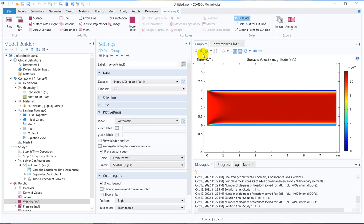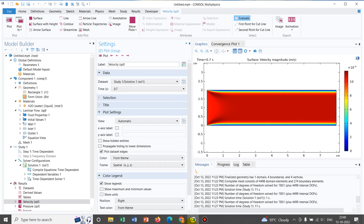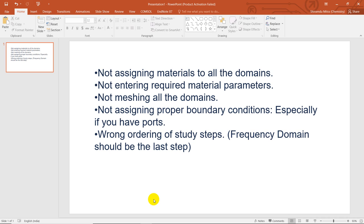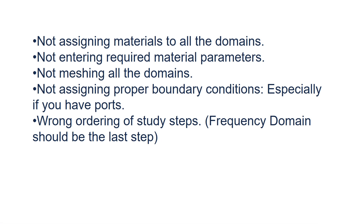So let us go ahead with today's discussion. As I have mentioned, there are a few common mistakes that we do and that lead to certain errors. Those common mistakes are: not assigning materials to all the domains, not entering required material parameters, not meshing all the domains. You can just guess — if you don't do these things, you should expect an error. Today I will show you in the console window how exactly these lead to an error.